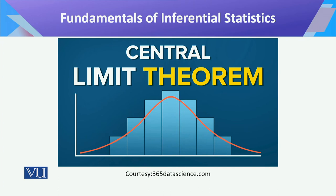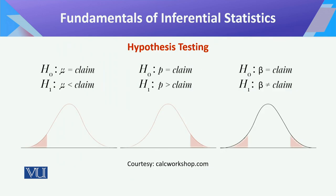The central limit theorem is very interesting. It says that everything in this world is normally distributed — which is in fact not always true — but this theorem is applicable in many situations. As you increase the sample size, it becomes closer to your population. When you study different statistical distributions, you will notice that as the sample size increases, the distribution can be converted into a normal distribution.